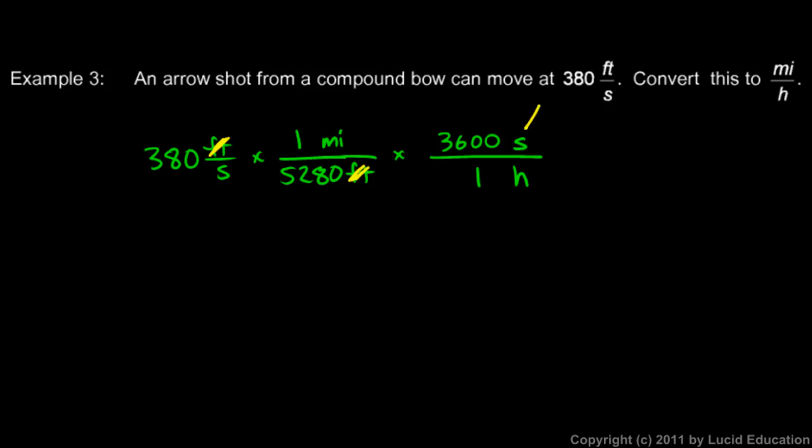Now let's do the math. The seconds here cancels with the seconds there. So let's scratch those out. And to actually do the calculation, we recognize that this 380 here is really the same as 380 over 1. So the 380 is in the numerator, and so is the 3,600. These two things are in the numerator. The 5,280 is in the denominator. So my answer is going to be this: 380 times 3,600 divided by 5,280.